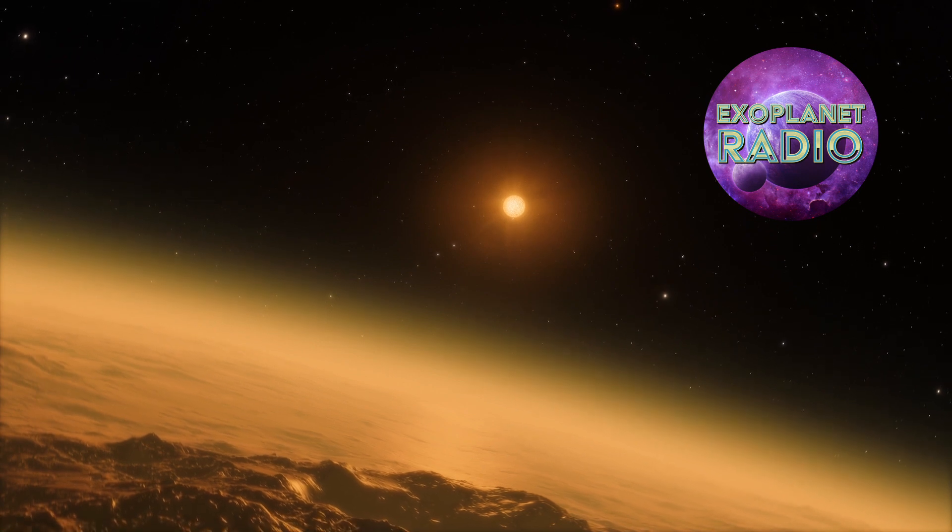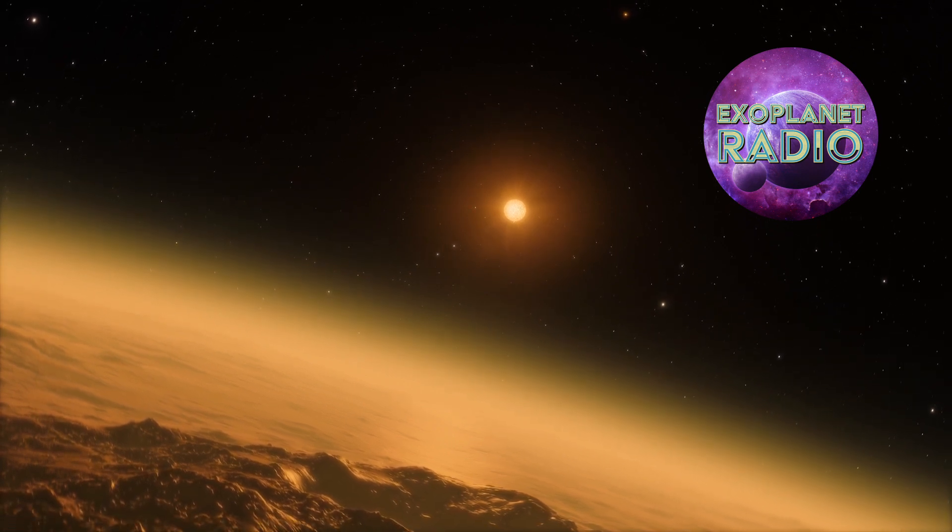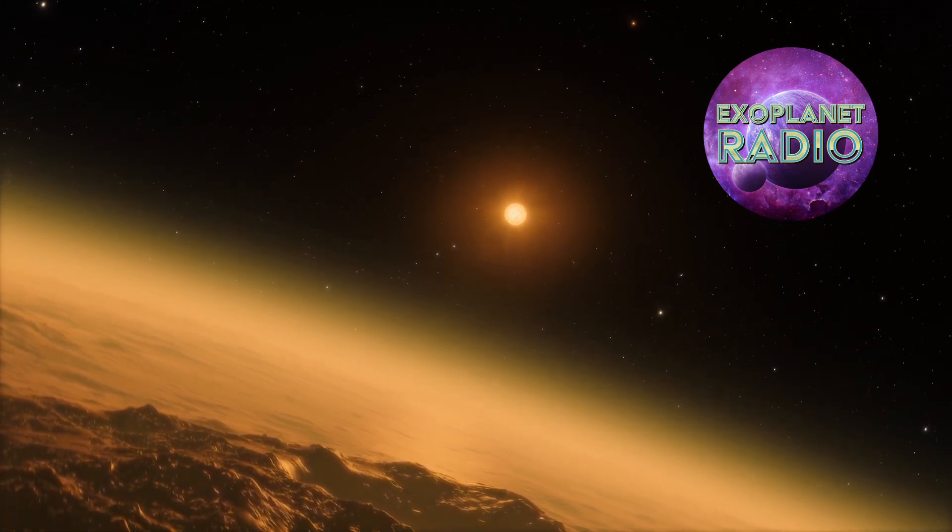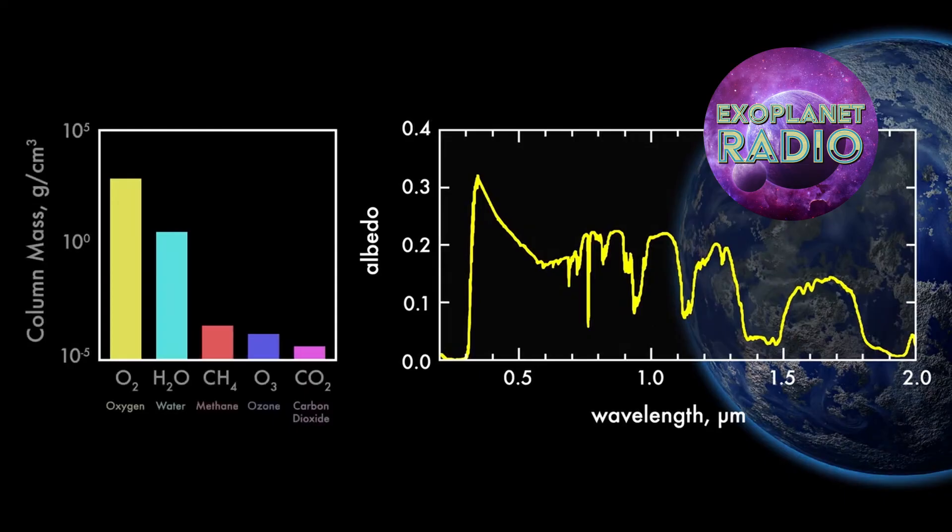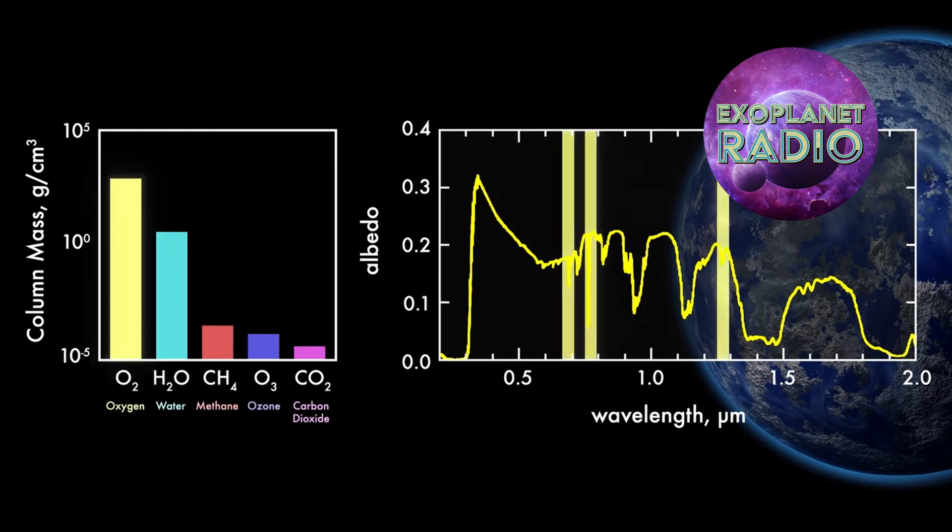For example, oxygen can be produced by photosynthesis, but it can also be produced by geological activity. The presence of atmospheric gases in a planet's atmosphere could be a sign of life, but it is important to consider other evidence as well, like organic compounds.